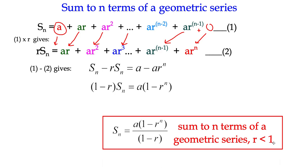And that's a formula that works for all geometric series. I've written r as less than 1, because it's particularly useful when the ratio is less than 1. You'll notice that both of these expressions remain positive in that case.